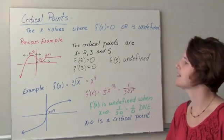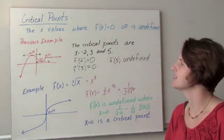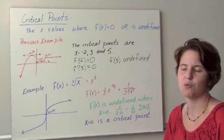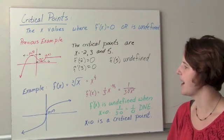So the critical points are the x values negative 2, 3, and 5.